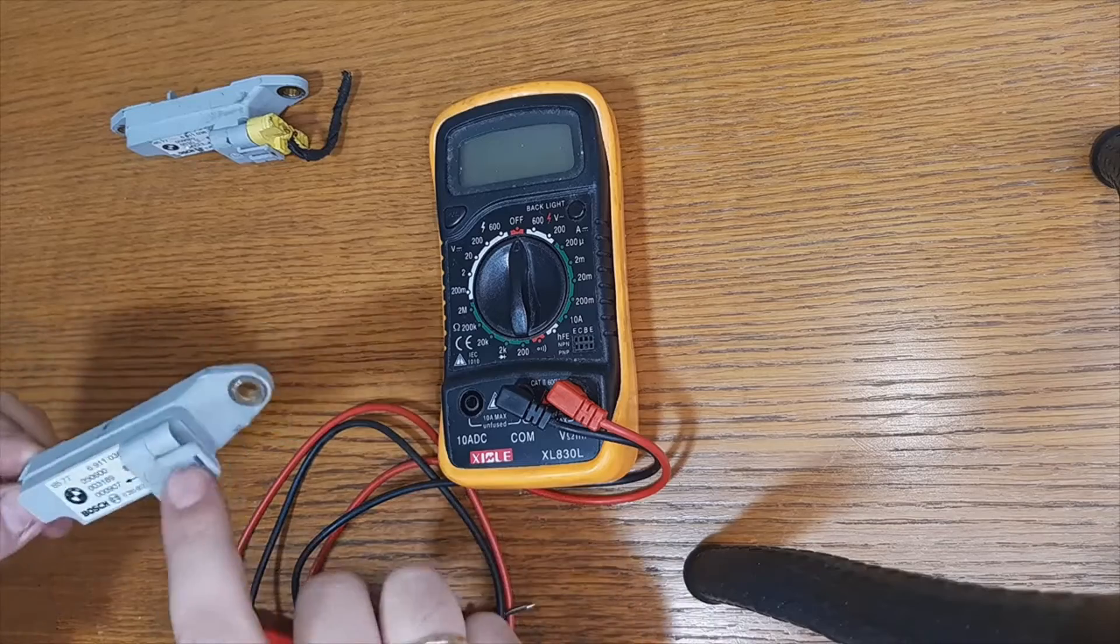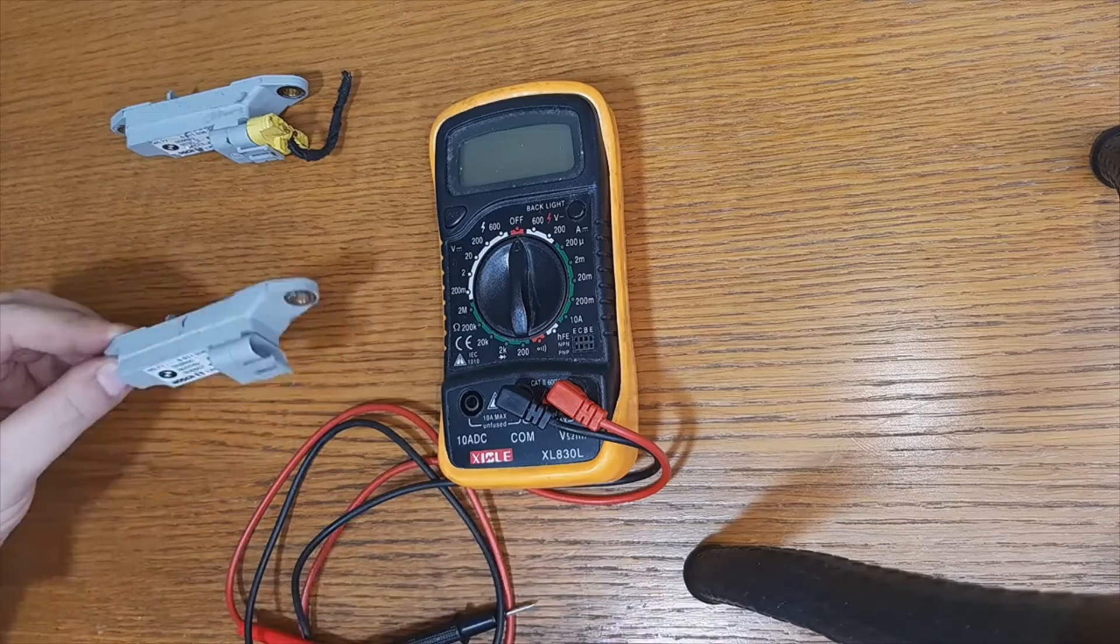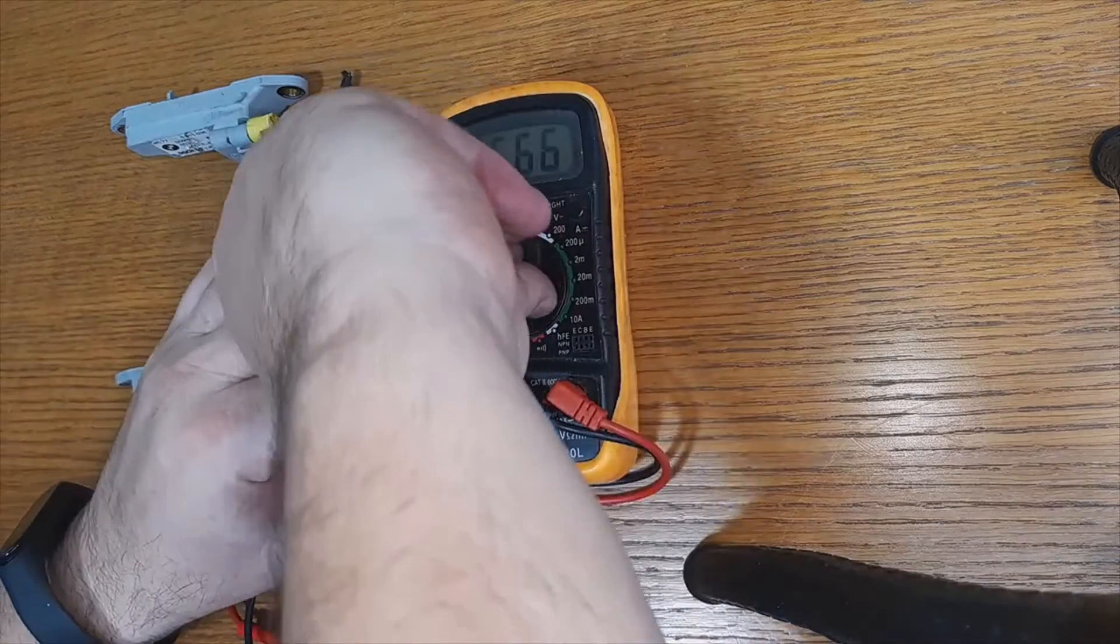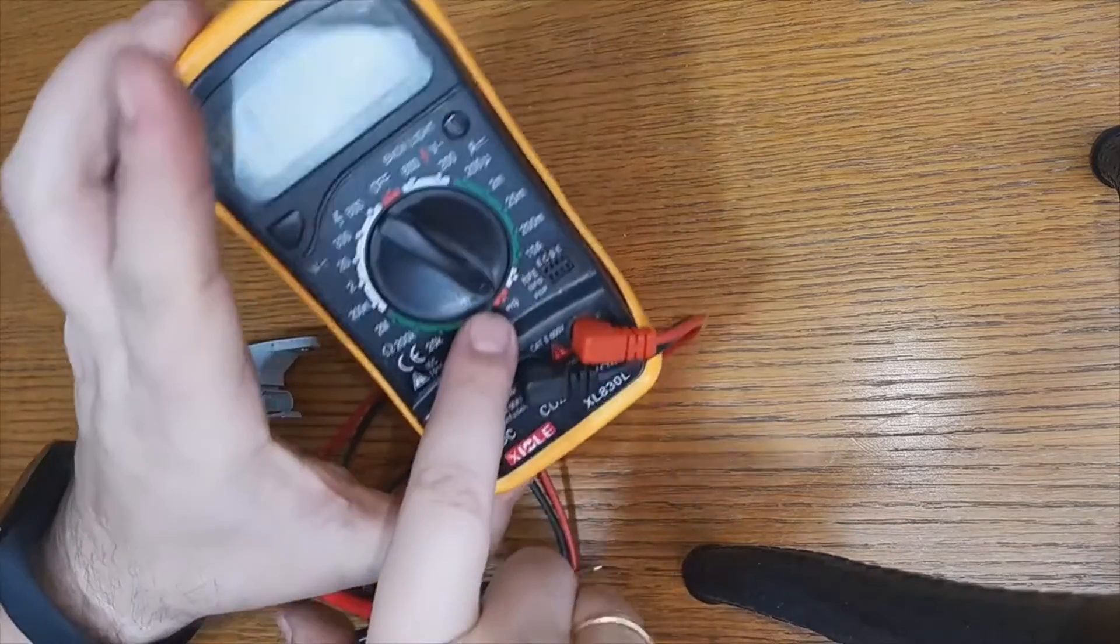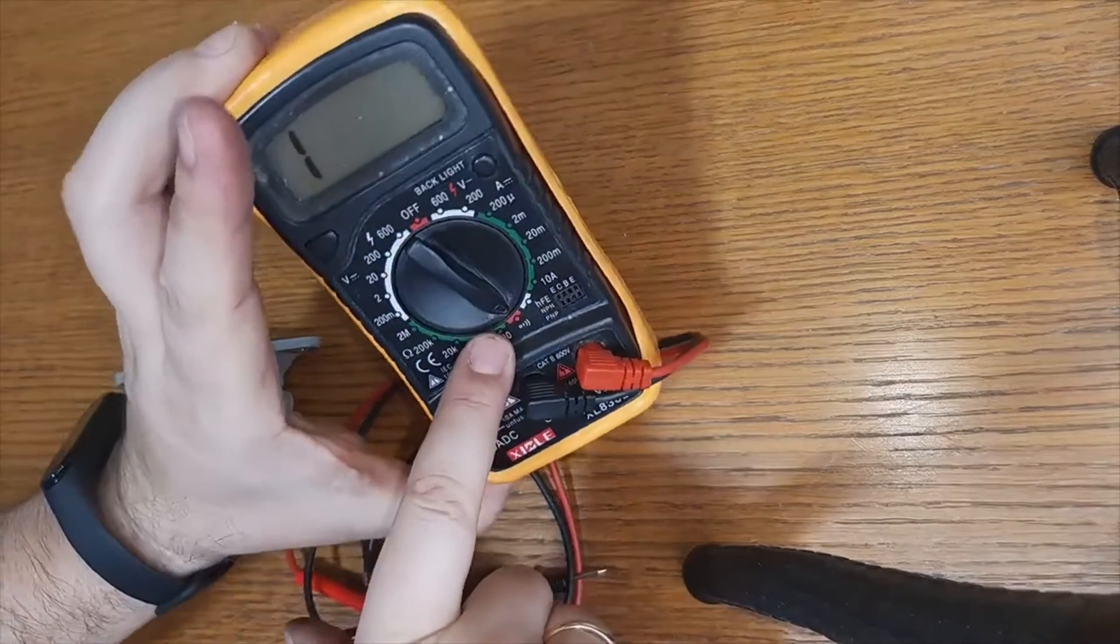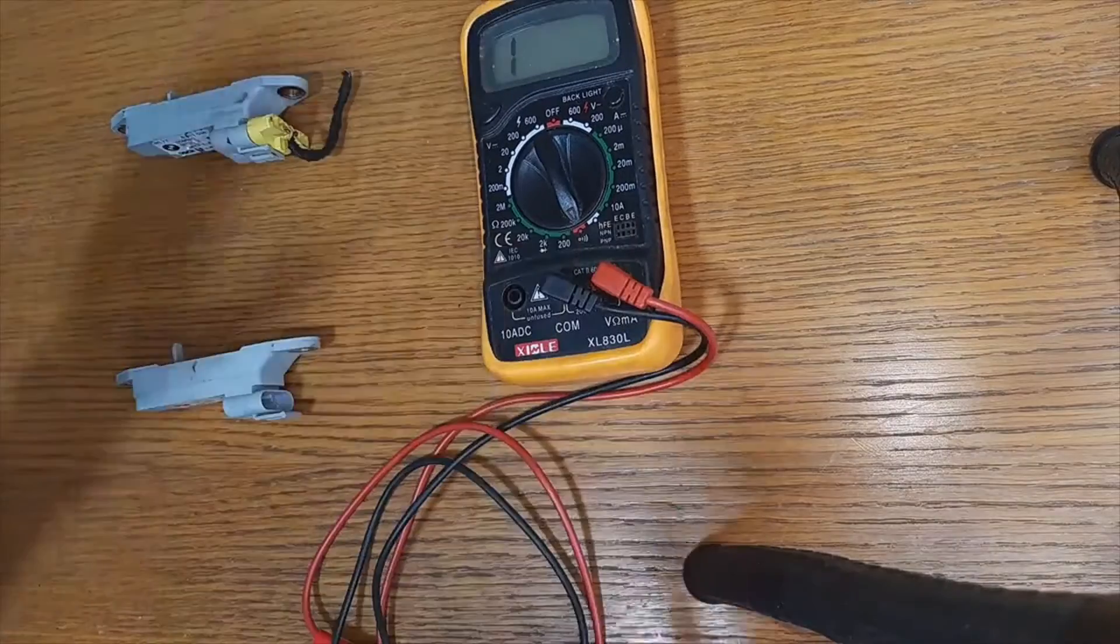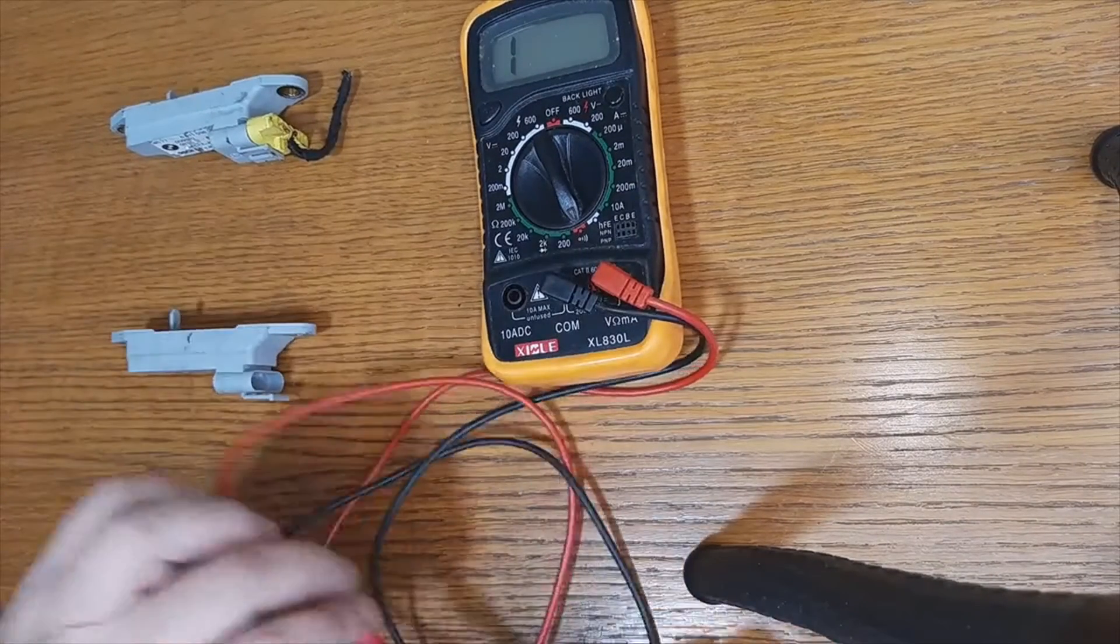I'm going to use the multimeter. We put it in ohms to check the resistance values. This other one we have bought it second hand. As the owner of the car said, the ideal is to buy it new before installing them.